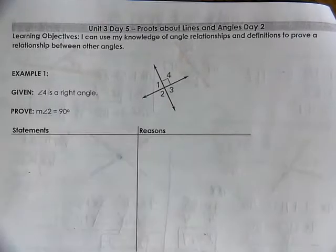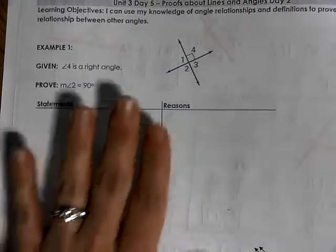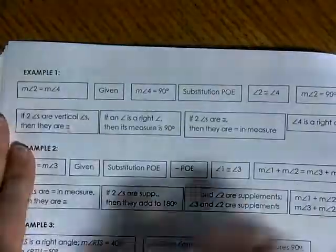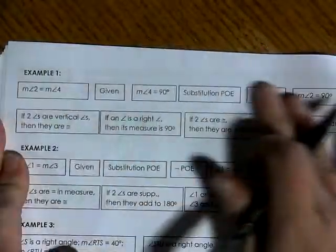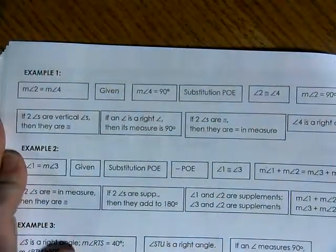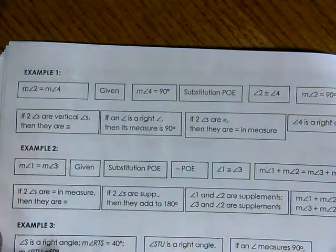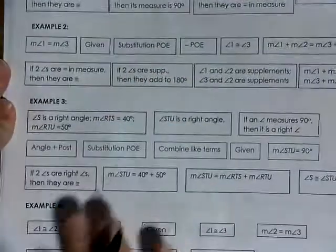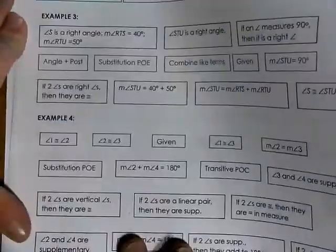All of our reasons and statements for the proofs are located in two pages. So in two pages, we have example one and here are all of the blanks that you will need for example one, example two, example three, and example four. We are putting all of the pieces together.